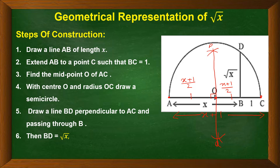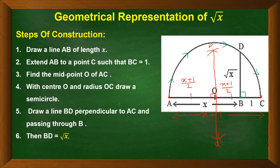Step four: with center O and radius OC, draw a semicircle. Step five: draw a line BD perpendicular to AC passing through B — at point B, draw a perpendicular using a protractor or compass, and mark point D on the semicircle. Step six: BD equals √x. This BD represents the square root of x.